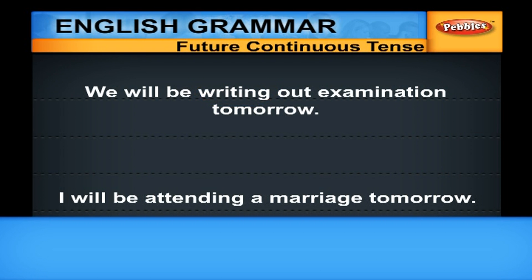So in all these cases, you are referring to a future action that will be in progress at some point of time — that is future continuous. Now we will go to the next aspect, that is future perfect.